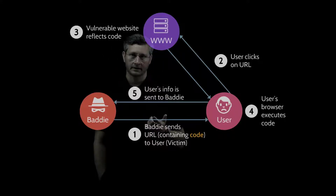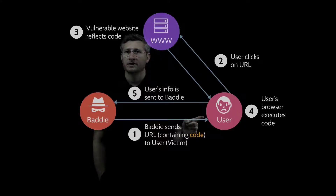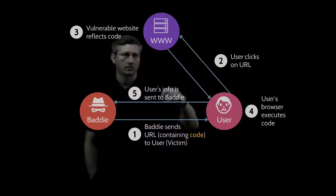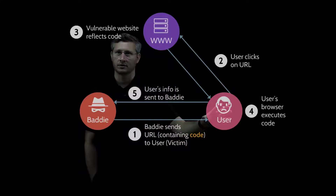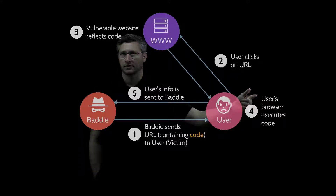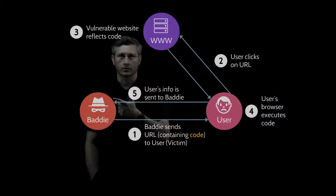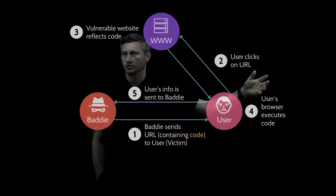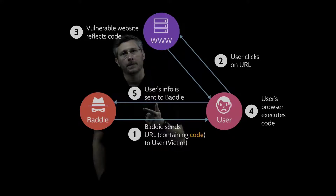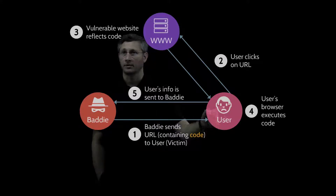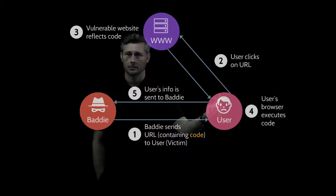We call this reflected cross-site scripting. Here's an interesting question: who is the victim of this attack? If another user goes to exactly the same website after this attack has occurred, are they going to be affected? The answer is no. Think about google.com — whatever you search for has no impact on the next user who searches for something else. This is why we say reflected cross-site scripting attacks are not persistent. The attack only occurs when a particular user clicks on a particular URL containing code, which is reflected back to just that user.